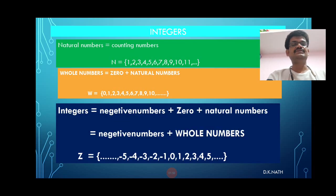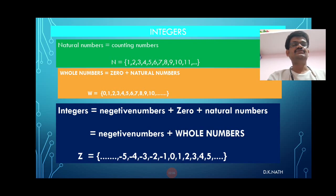Integers are nothing but negative numbers, 0, and natural numbers. We also know that negative numbers plus whole numbers, denoted by Z, includes negative numbers, 0, and positive numbers.